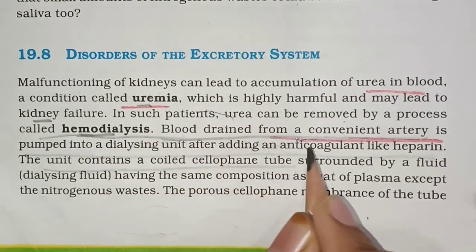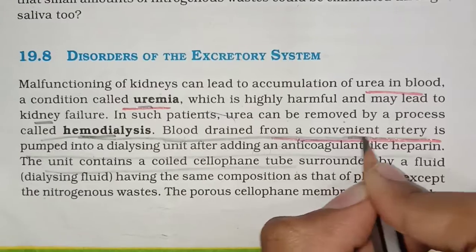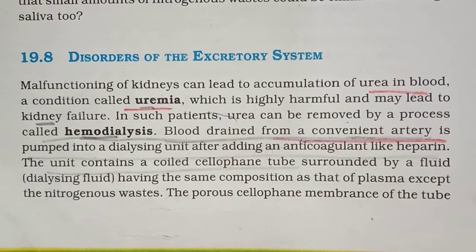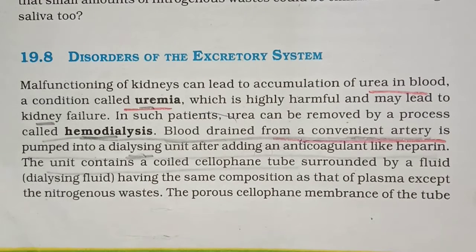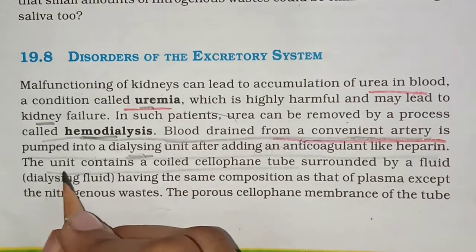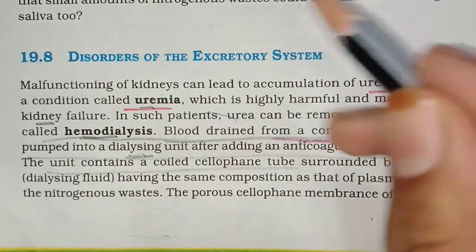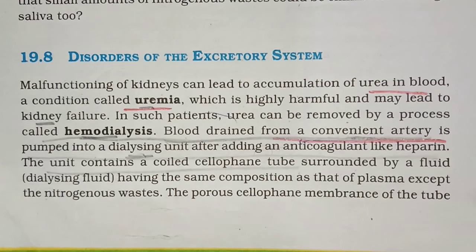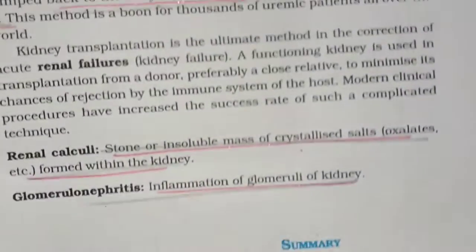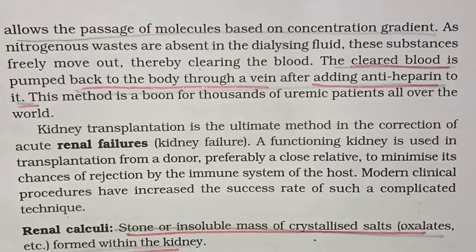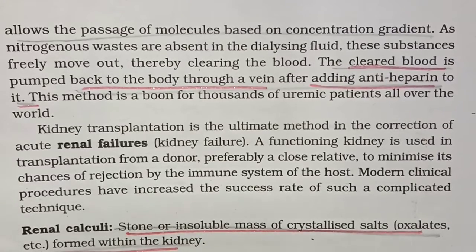In hemodialysis, blood is artificially drained from the body. We can remove blood from the arteries. The blood is passed through a dialysis machine and an anticoagulant, heparin, is added so that the blood does not coagulate. This is the dialysis unit — a cellophane tube coiled in dialysis fluid — and urea is removed through the porous cellophane membrane.